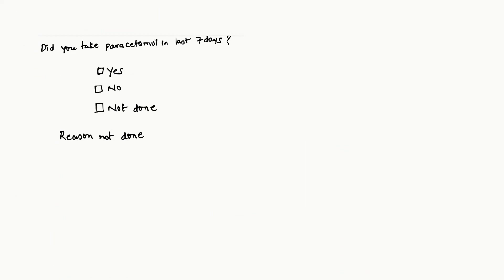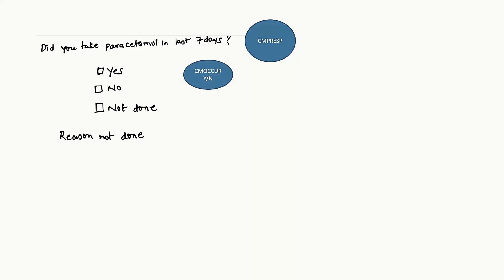Some pre-specified information is present in the protocol. For example, for paracetamol, they collect specific concomitant medication information because drug interaction may occur between the study drug and paracetamol. The investigator will ask: did you take this particular concomitant medication in the last seven days? These pre-specified questions have responses of yes, no, or not done. This information is captured in CMPRESP — concomitant medication pre-specified — and whether it occurred is captured in CMOCCUR. If the subject did not answer or the investigator did not ask the question, the CMSTAT variable can be set to not done.